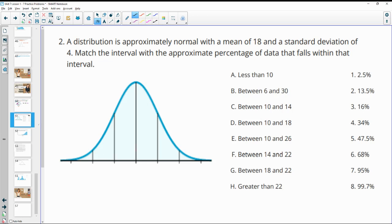Number two: A distribution is approximately normal with a mean of 18 and a standard deviation of 4. Match the interval with the approximate percent of data that falls in each interval. So the mean we know is in the middle here. And then we can add and subtract the standard deviation to get these other numbers. So subtract 4 and you get 14. Add 4 and you get 22. So there's one standard deviation.